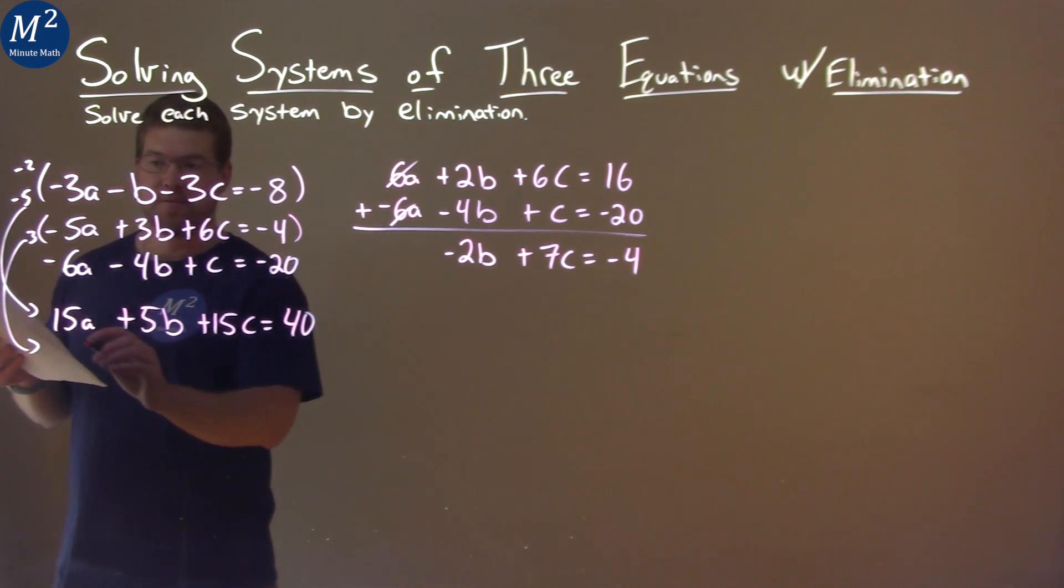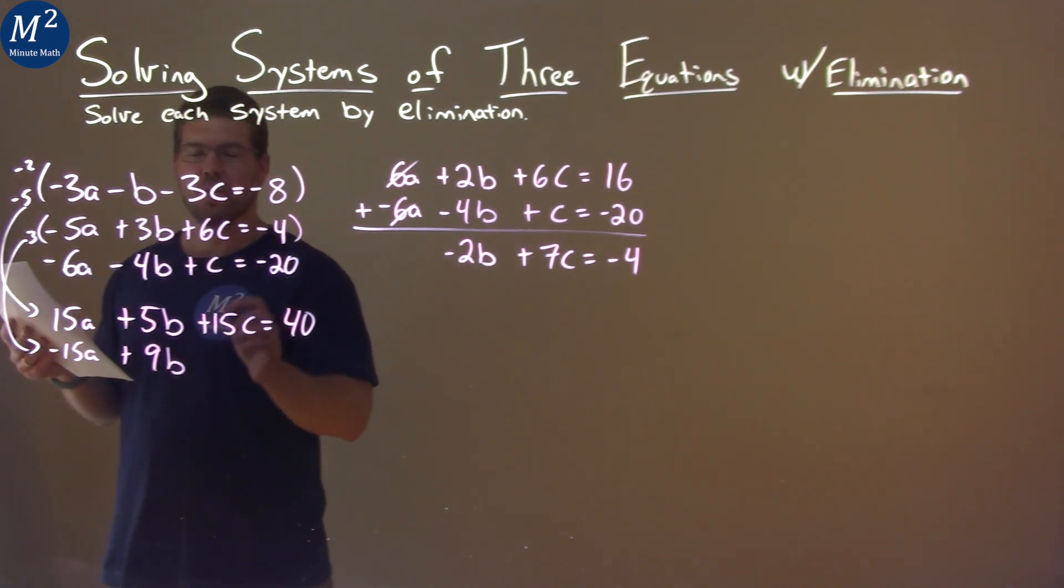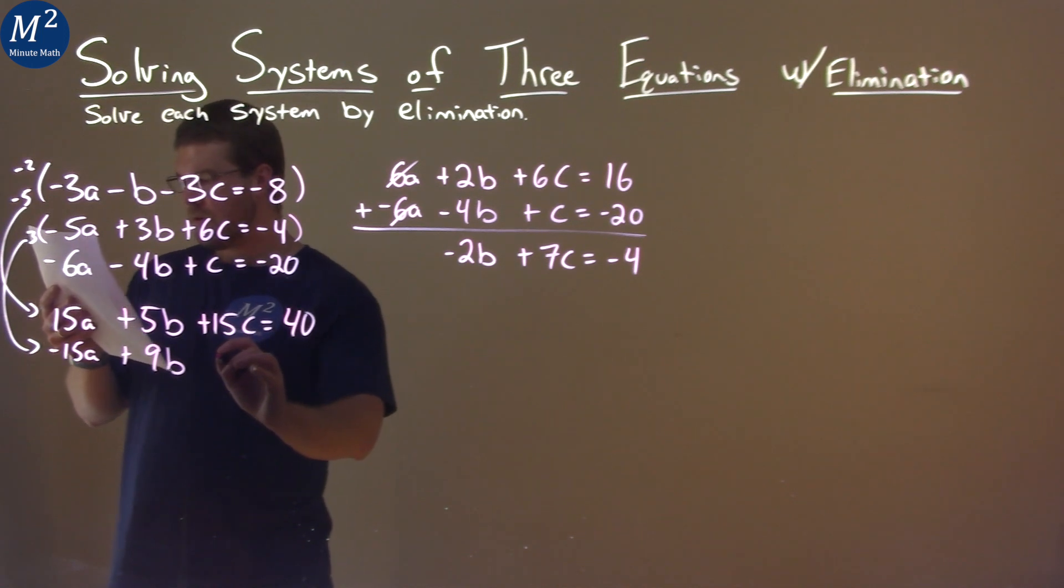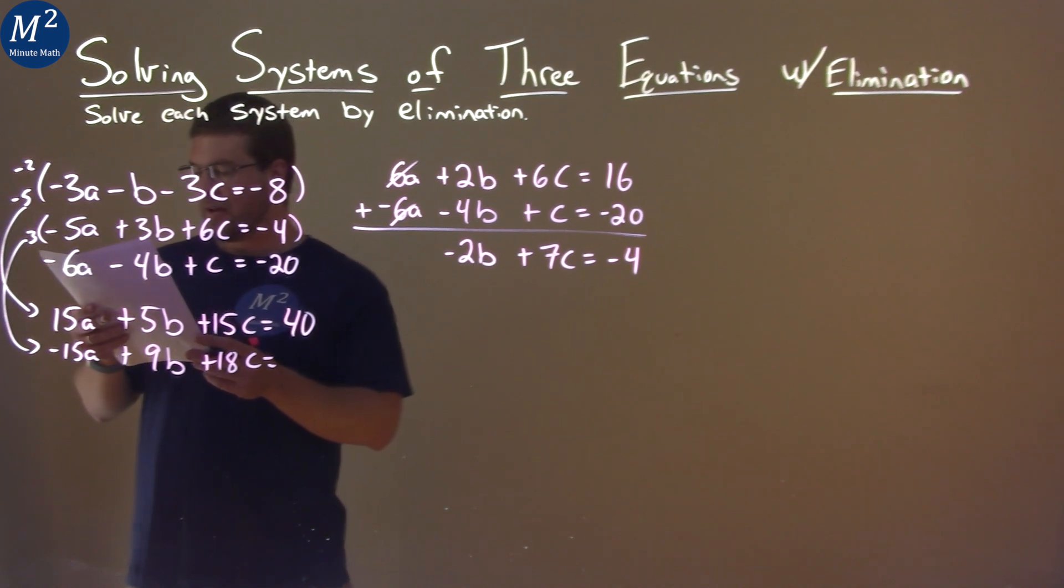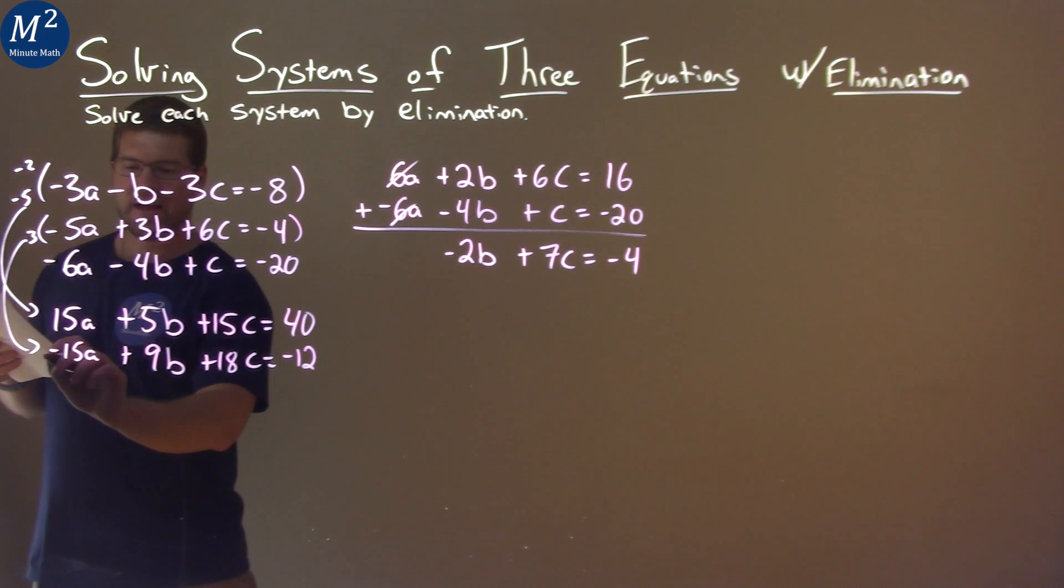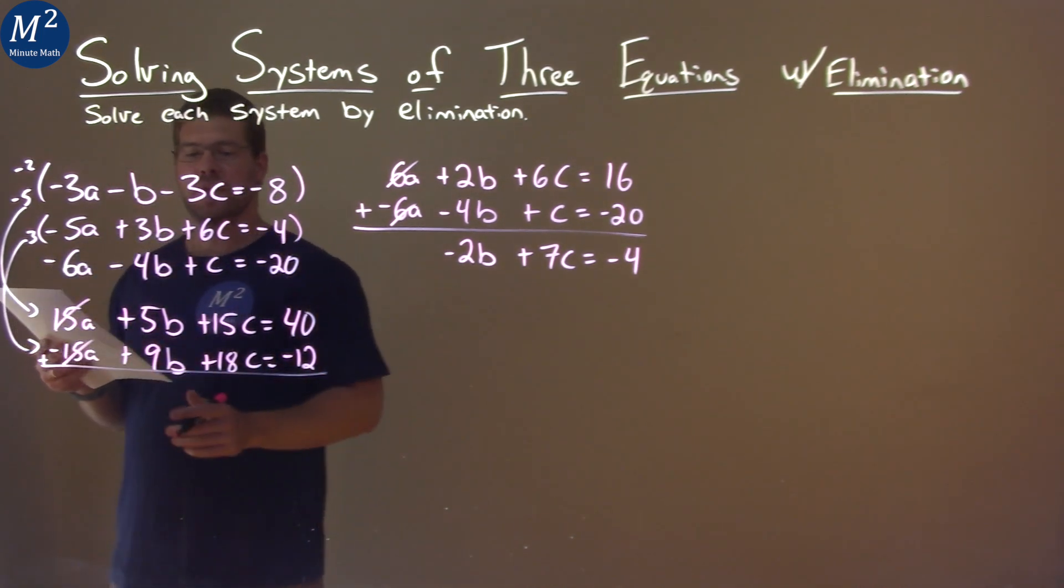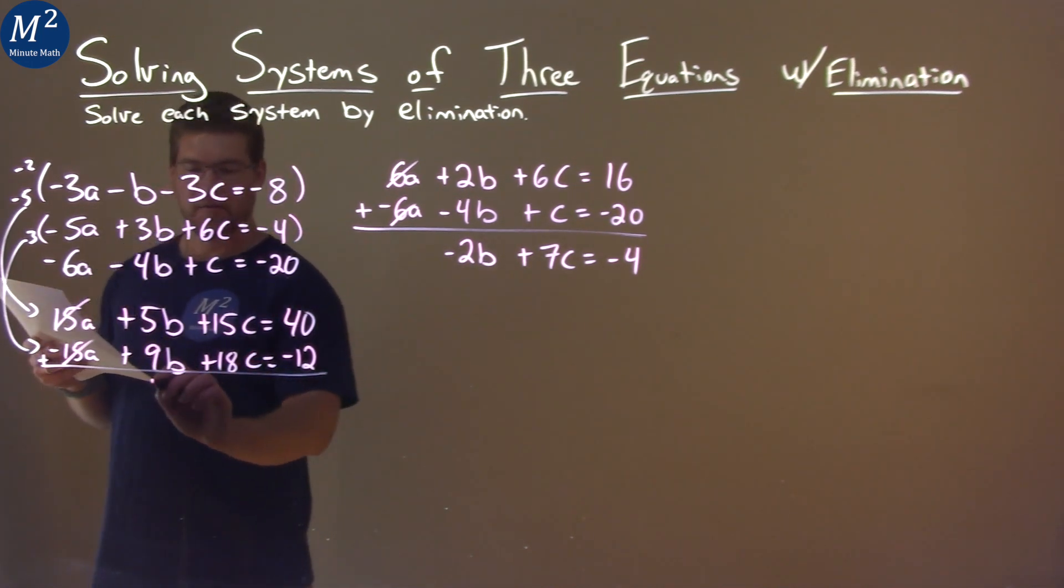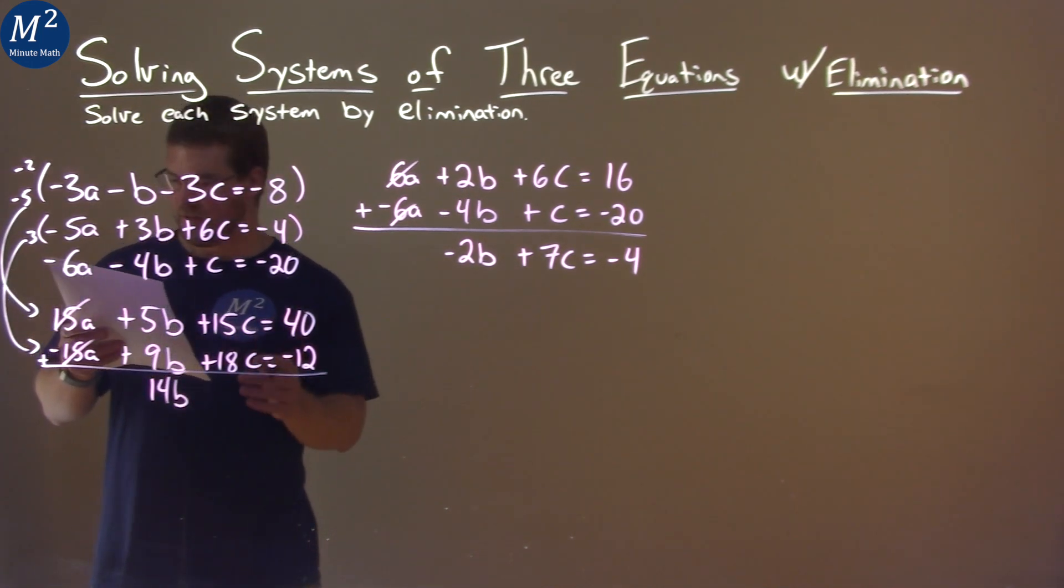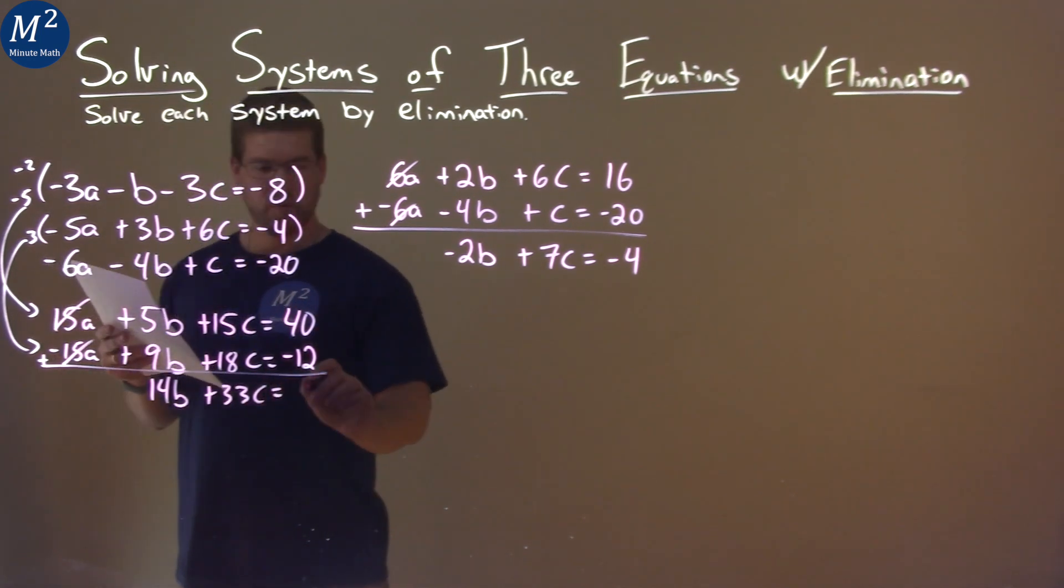Multiply the 3 across. We have 9b, and then 3 times 6 is 18, so we have 18c equals 3 times negative 4, which is negative 12. We now can add these two equations together. The 15a's will eliminate. 5b plus 9b is 14b. 15c plus 18c is 33c. And 40 plus negative 12 is 28.